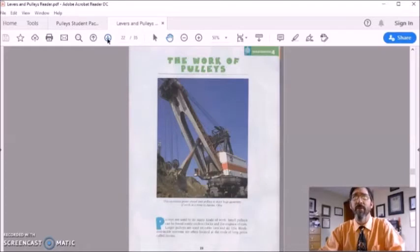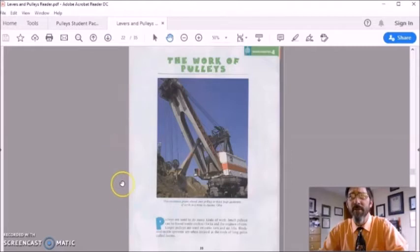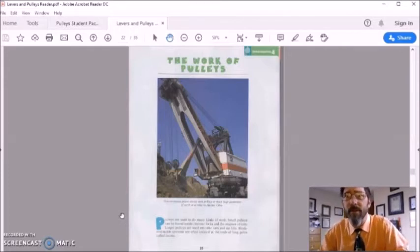The work of pulleys. Pulleys are used to do many kinds of work. Small pulleys can be found inside cuckoo clocks and the engines of cars. Larger pulleys are used on cable cars and ski lifts.